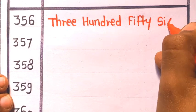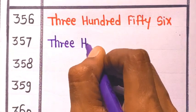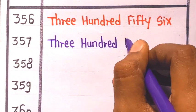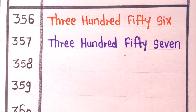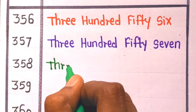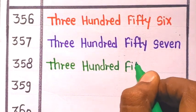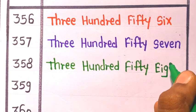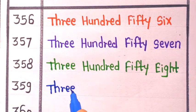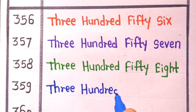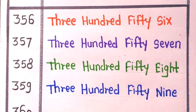Three fifty-seven is three hundred fifty-seven. Next is three fifty-eight is three hundred fifty-eight. Three fifty-nine is three hundred fifty-nine.